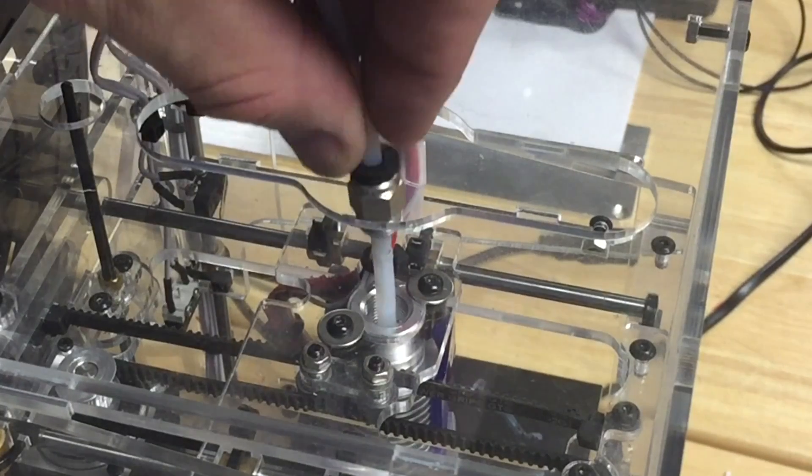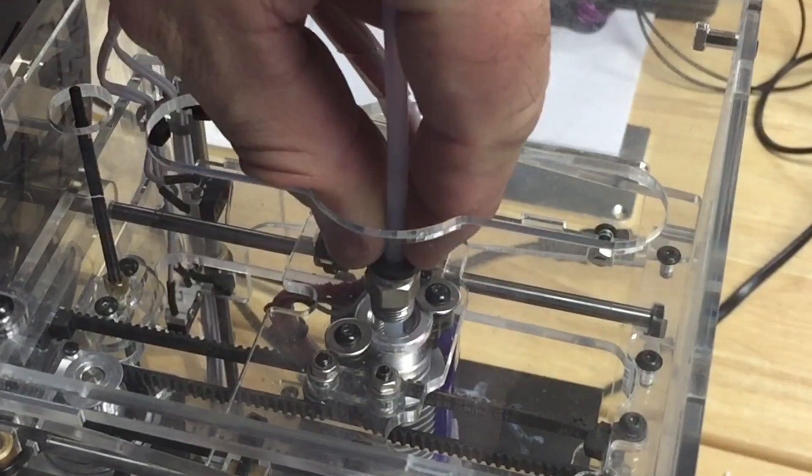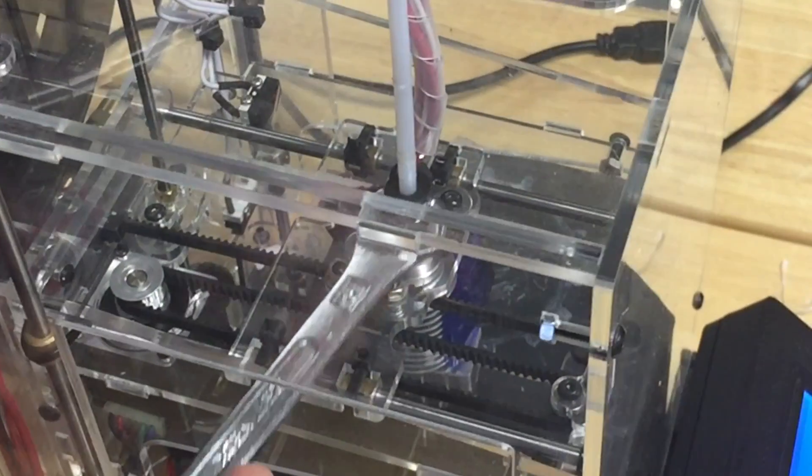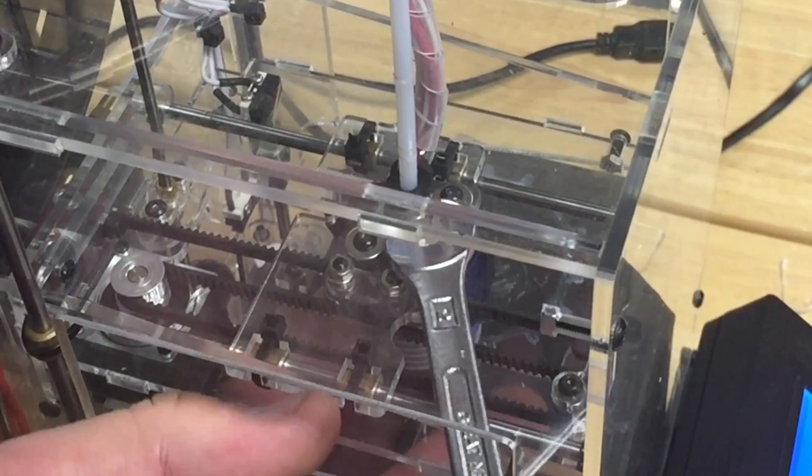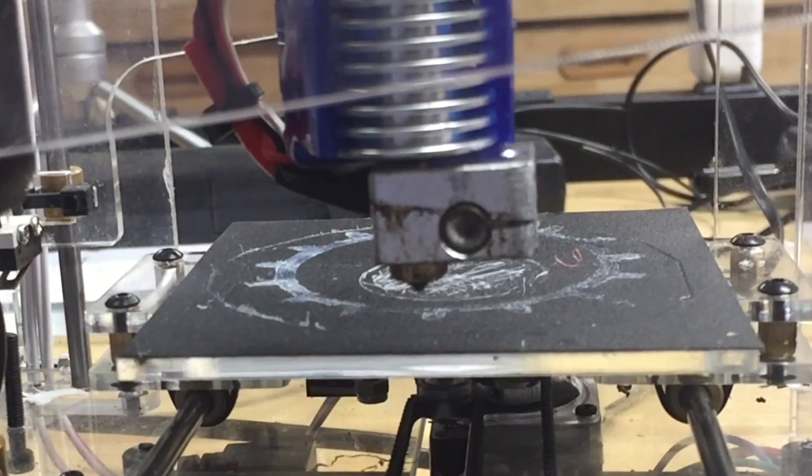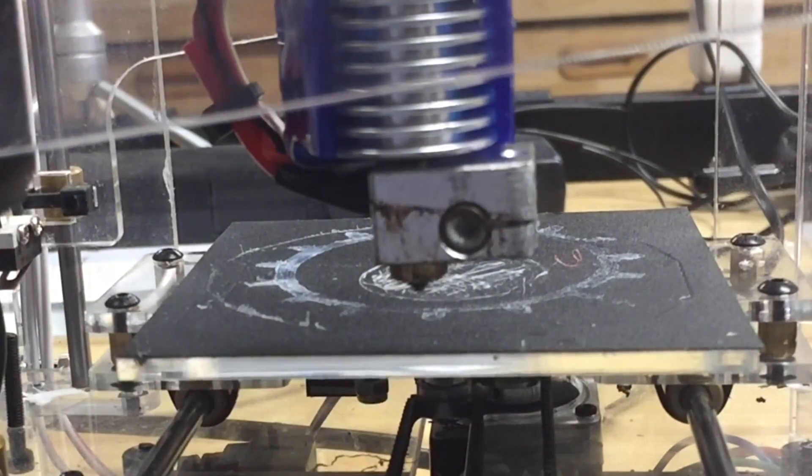Once everything's tightened up, just slide the Bowden tube back in. It's going to go down into the hot end, and then just slide the nut down and hand tighten it all the way until it basically stops. Then finish it off with the wrench. When you're done it should look like this. The nozzle in the center and the heat end towards the front. Then just load some filament, push it through, make sure it's flowing, and you're ready to start printing again.